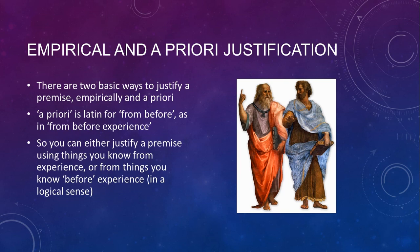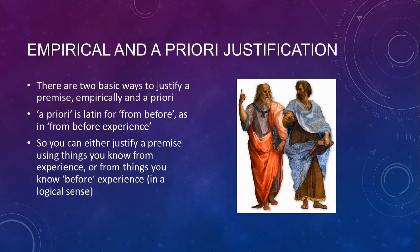Here's Aristotle and Plato — Plato's the one pointing up, referring to the a priori justification of proper knowledge, the transcendental realm of the forms. Plato believed that proper knowledge comes from rational reflection, that experience is a kind of illusion confusing you about the nature of reality — you should ignore experience and focus only on pure rational thinking. Aristotle's like: we need to actually have experiences to have justified knowledge. This world is relevant to justifying our beliefs. Aristotle is pointing down toward the ground, saying we need some empirical facts.